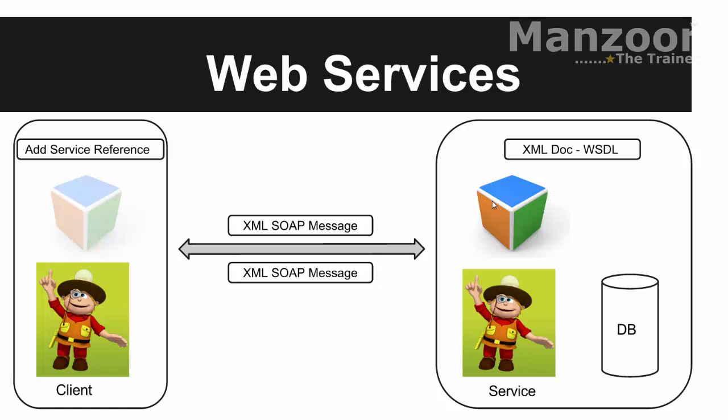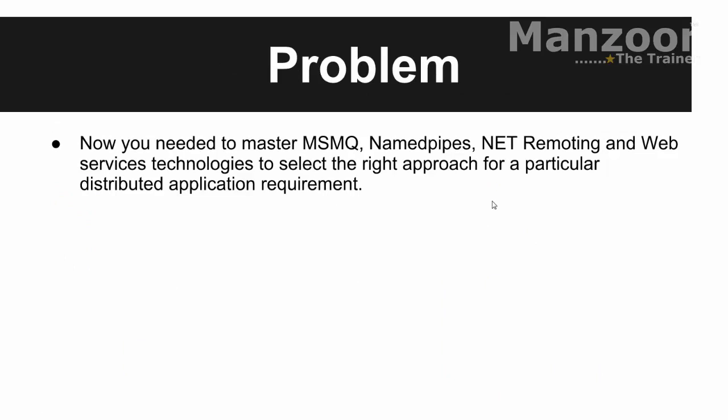My client can be anything — a Java client, a PHP client, or a .NET client. Whatever the scenario, we were using MSMQ or named pipes in some cases, .NET remoting in others, and web services in yet others. The problem is that you need to master MSMQ, named pipes, remoting, and web services technologies to select the right approach for a particular distributed application requirement. That means you need to understand different namespaces, remember different classes and methods, and know the process to implement service oriented architecture in each approach. Let us see the solution in our next video.